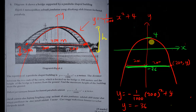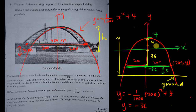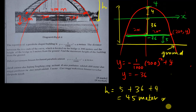Some students might think from negative 36 to 4 is just 40 units, but remember the bridge still has a 5-meter height from the ground. So the ground is below the bridge. The total height from the ground to the maximum point of the building is: 5 meters (bridge from ground) plus 36 units (from bridge level down to y = negative 36, i.e., the span from negative 36 to 0) plus 4 units (from 0 to the maximum at y = 4). So total height = 5 + 36 + 4 = 45 meters.